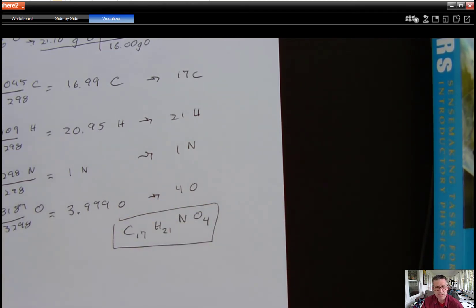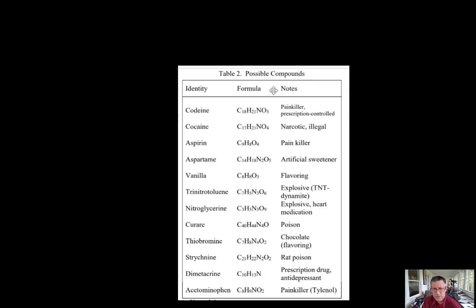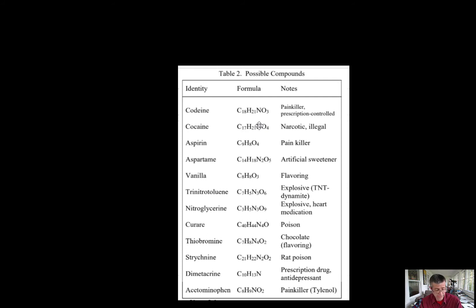I'm going to go look that up in my list of compounds and look for C17H21NO4. It turns out that is the formula for cocaine. The substance found in the bloodstream of passenger number one was cocaine. You can decide who that was.